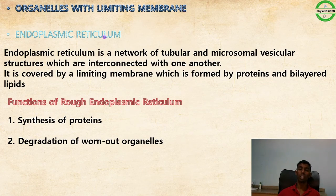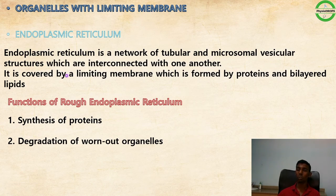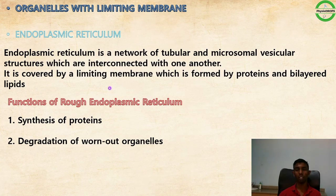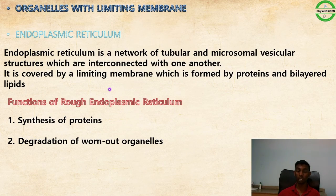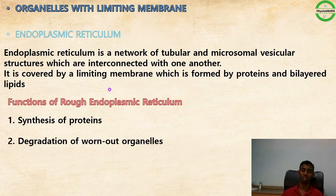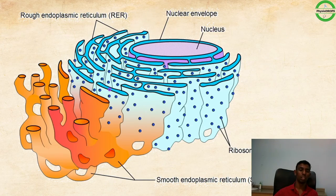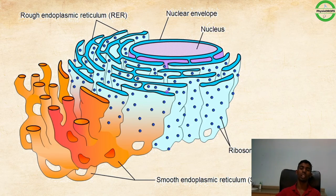The endoplasmic reticulum (ER) is a network of tubular and microsomal vesicular structures forming an interconnected network inside the cell. It is covered by a limiting membrane formed by proteins and bilayered lipids. The functions of rough endoplasmic reticulum include synthesis of proteins and degradation of worn-out granules, and it acts as an interconnecting network between cell structures.